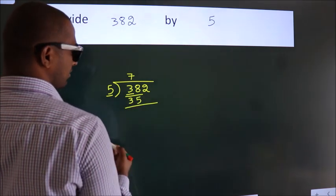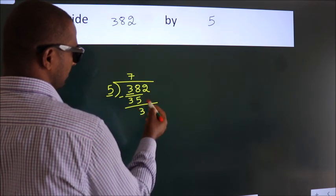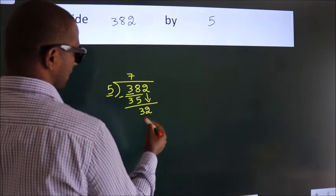Now we should subtract. We get 3. After this, bring down the next number: 2 down. So 32.